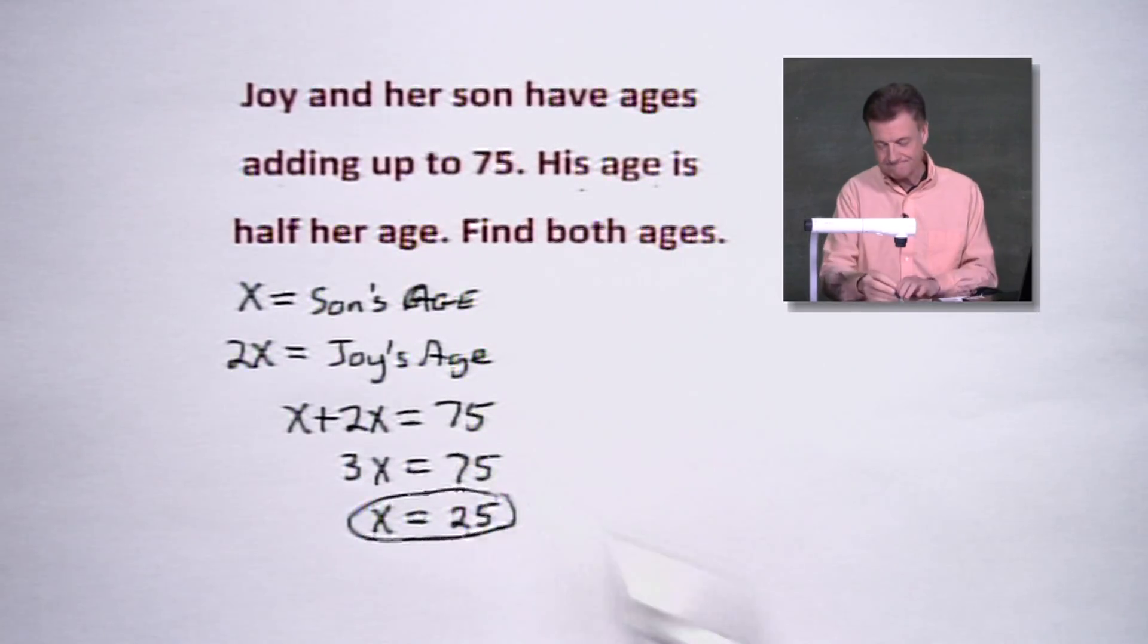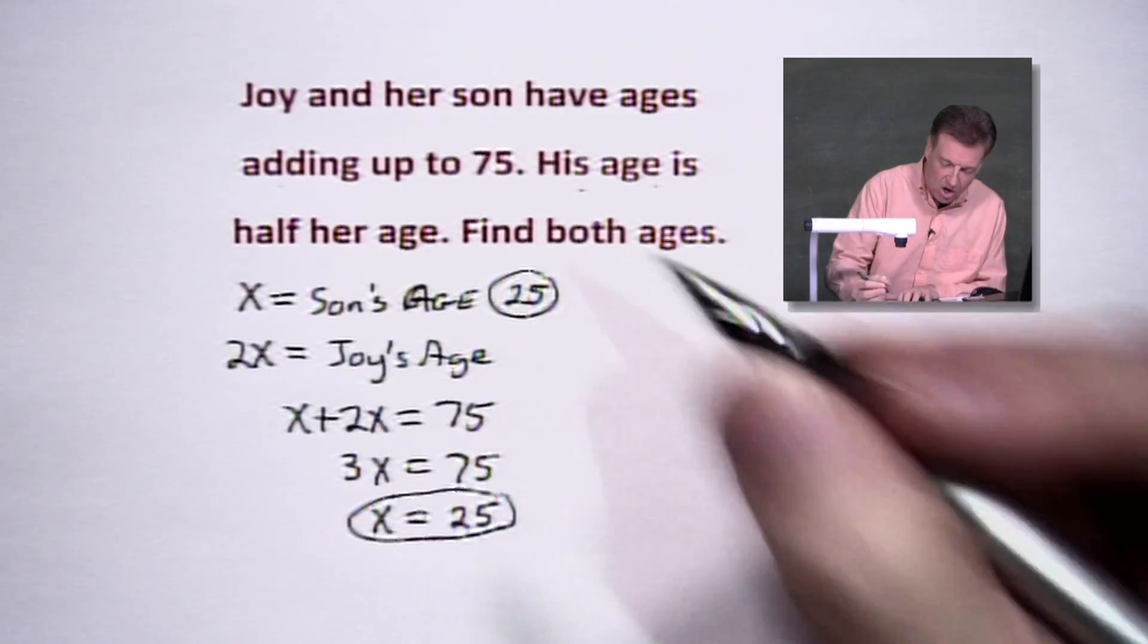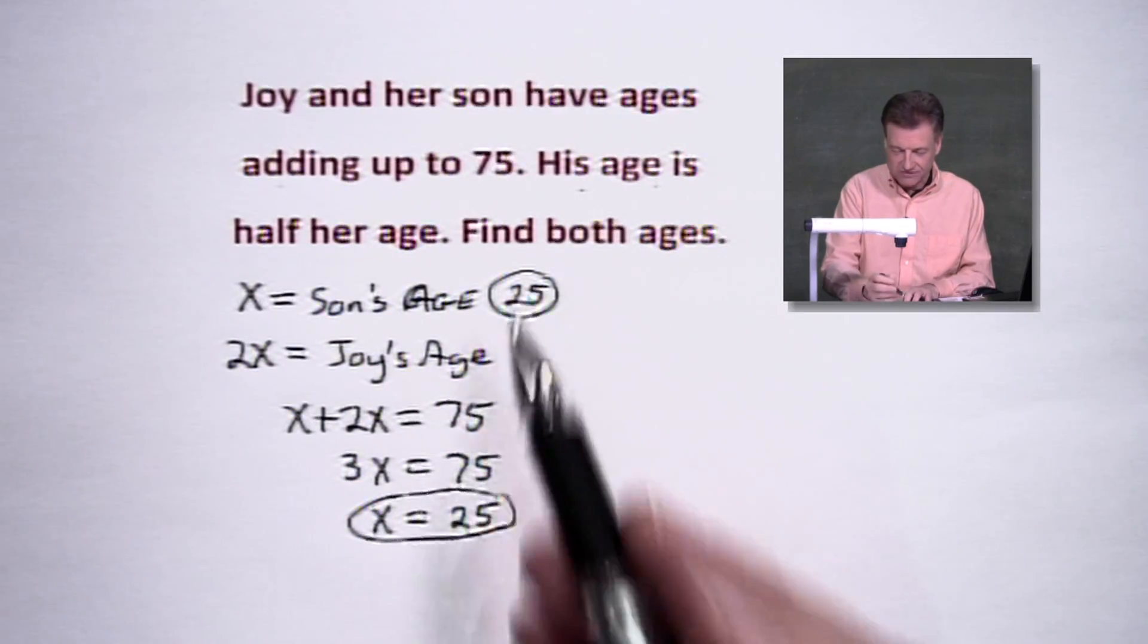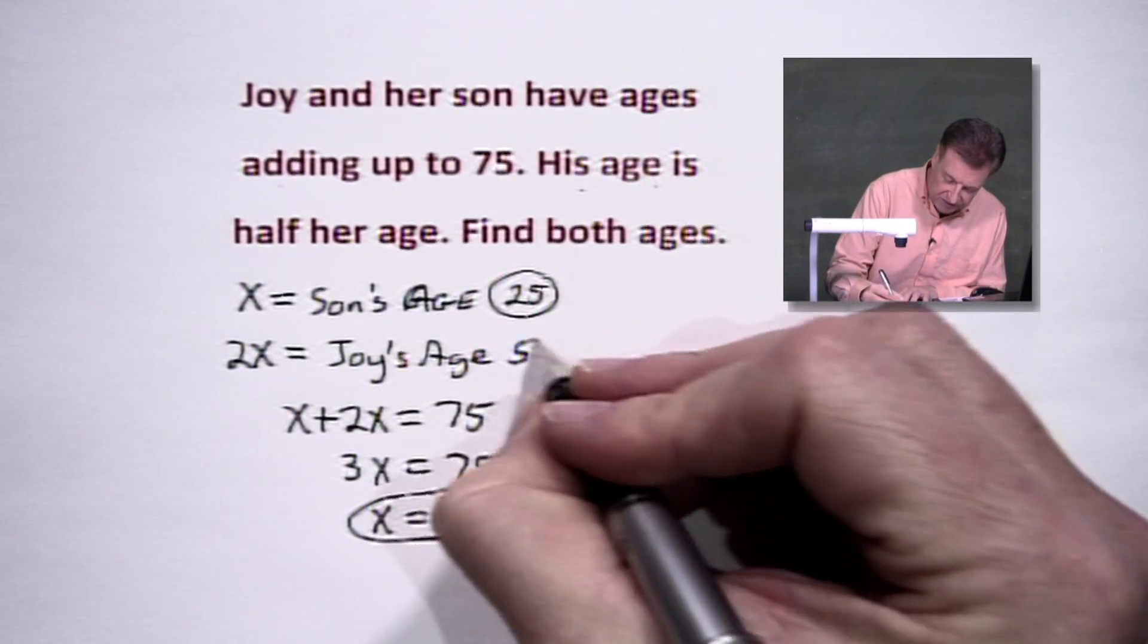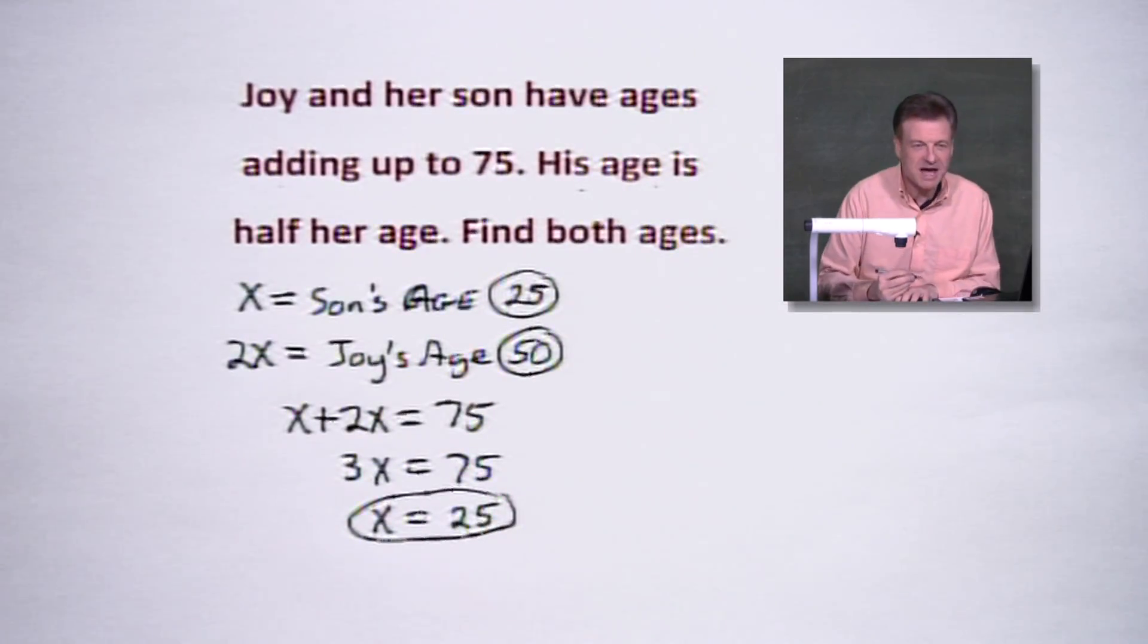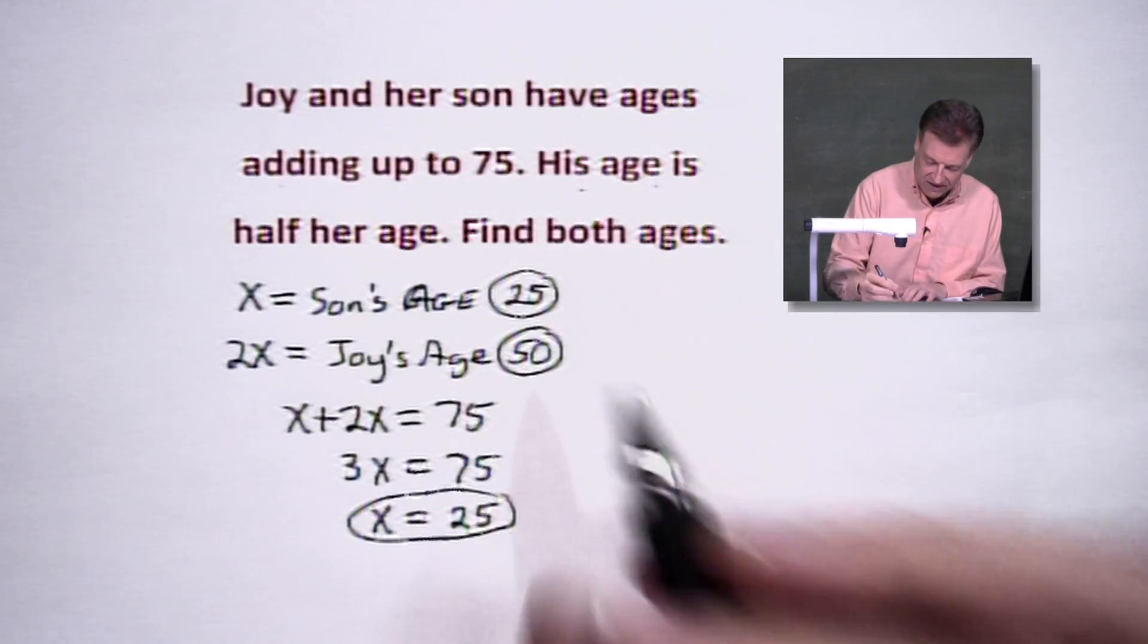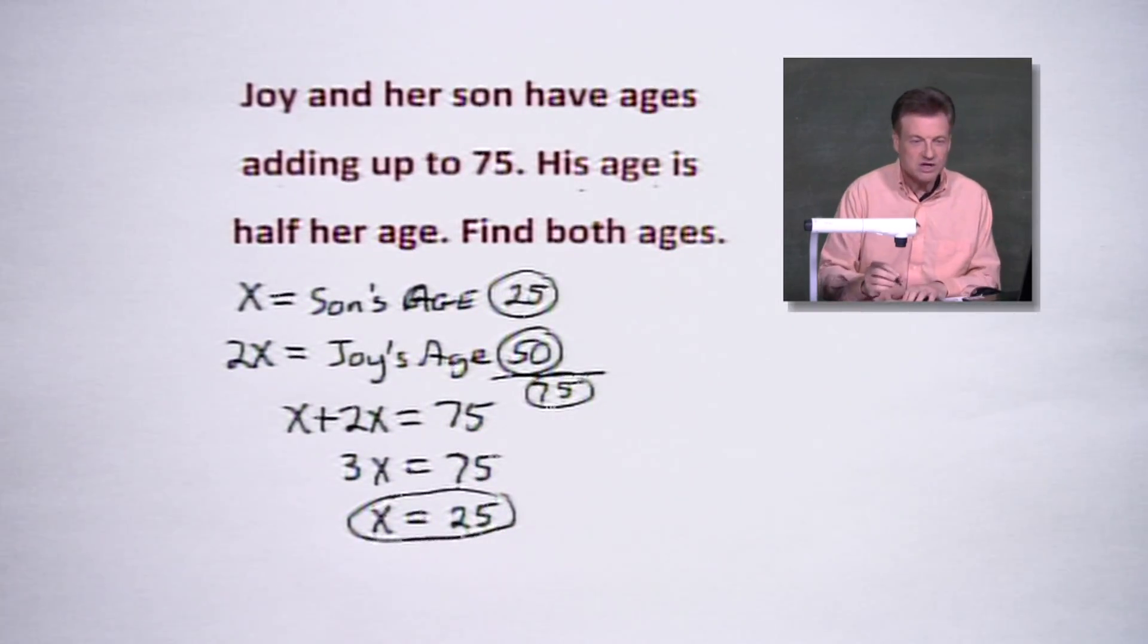Now, whose age is that? Son's age right there. So we've got 25. What are we going to do to figure out Joy's age? We're going to say two times that 25. Two times that 25. And that's going to give us 50. Now, your question as well as mine is, okay, we've got the double part. Do they add up to 75? Easy mental check here. Yes, they do. So there's the story setting it into motion.